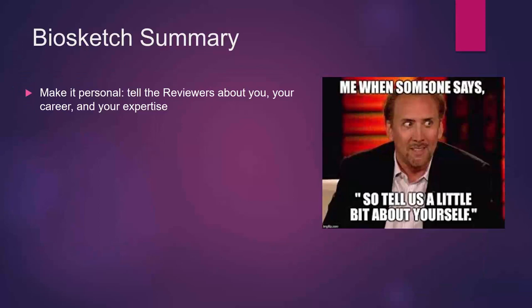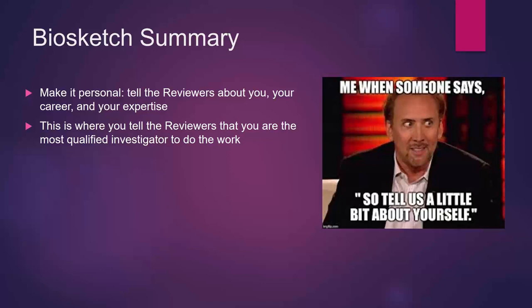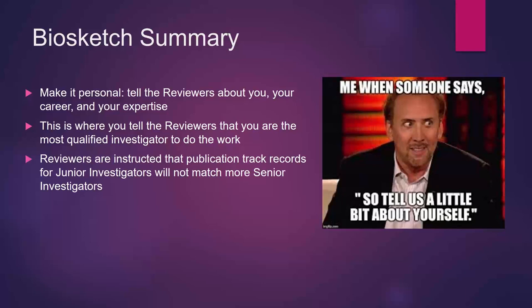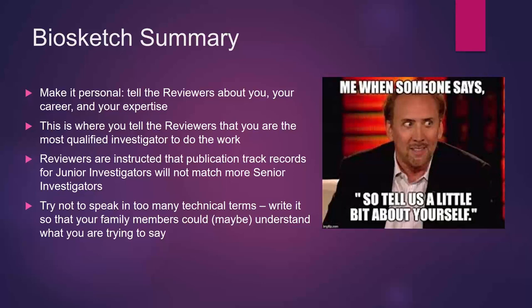To summarize the biosketch: make it personal, tell the reviewers about you, your career, and your expertise — particularly in Section A. This is where you tell reviewers that you are the most qualified investigator to do the work you're proposing. Reviewers are instructed that publication track records for junior investigators will not match more senior investigators, but they do want to see at least some publications in the research area you're going into, unless you're applying for something like a K01, which is targeted for people going into a new area. Try not to use too many technical terms — write it so your family members can understand, because many reviewers won't be experts in your research area. Be clear and to the point, and define your terms.